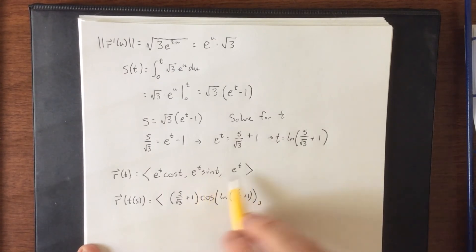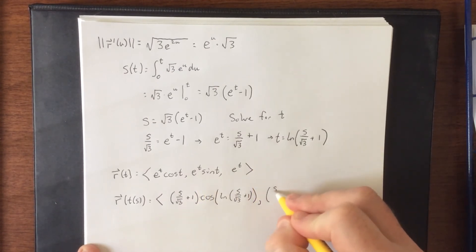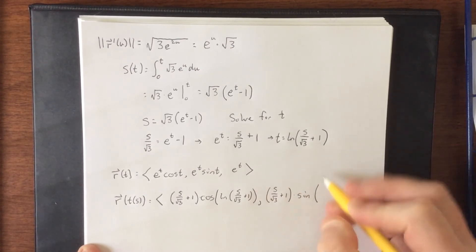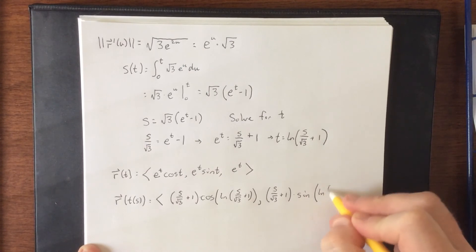Next one will be e to the t sine of t, so e to the t s over the square root of three plus one times the sine of t, natural log of s over the square root of three plus one.